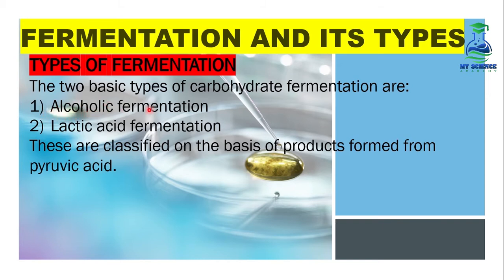These types of fermentation depend on the formation of the end product. In the alcoholic fermentation process, the end product is alcohol. But in the lactic acid fermentation process, the end product is lactic acid. On this basis, you can understand these two types. They are classified based on the products formed from pyruvic acid.